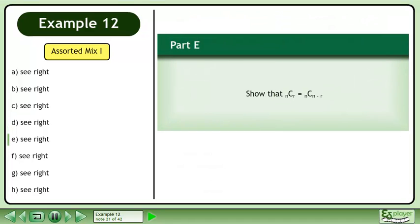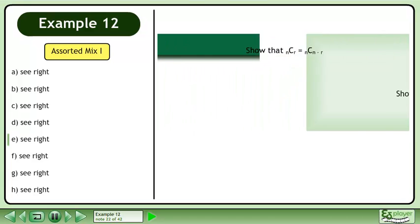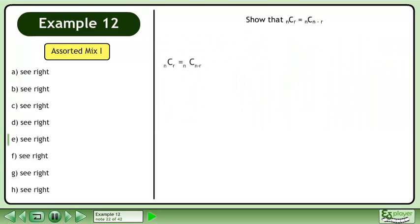Now we'll move on to Part E. Show that n choose r equals n choose n minus r. Rewrite the question.